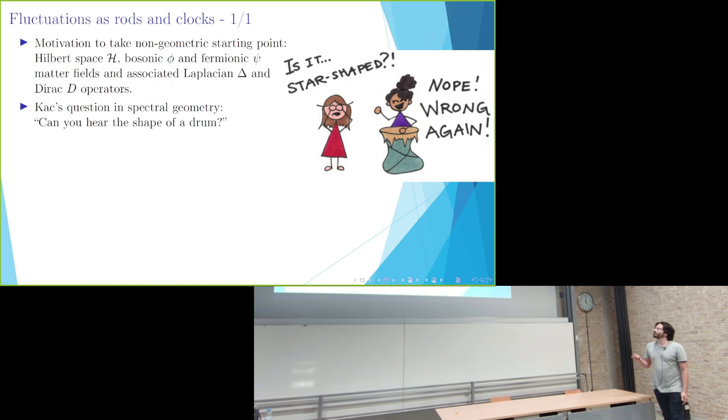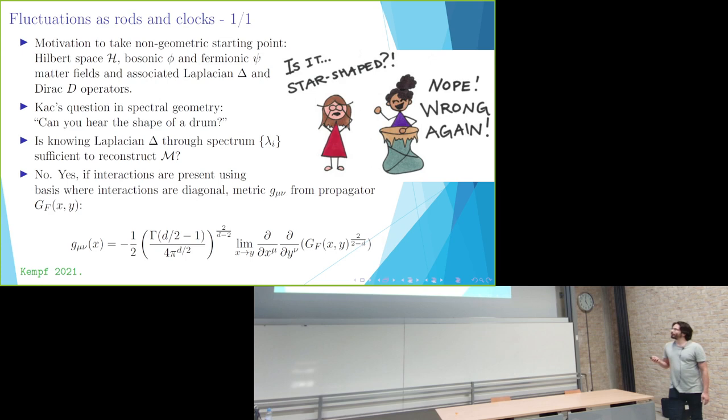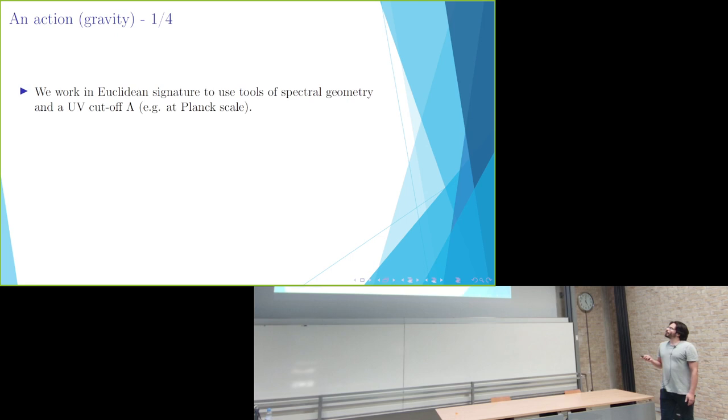This is related to, or in the tradition of, this famous question by Marcus: can you hear the shape of a drum? It's from the field of spectral geometry. To formulate it differently: can we, just from knowing the spectrum of a Laplacian, reconstruct a manifold with its metric? And it was famously shown that the answer is no, because there are some isospectral geometries. But recently it has been shown that when you have actually interactions as well, you can use the basis in which these interaction vertices are diagonal together with this expression to get the metric from a propagator and its position basis.